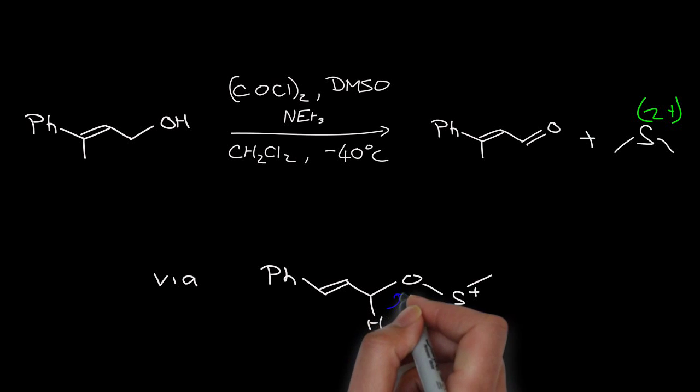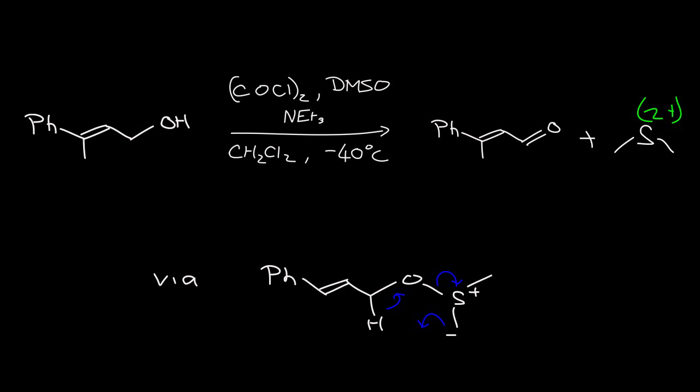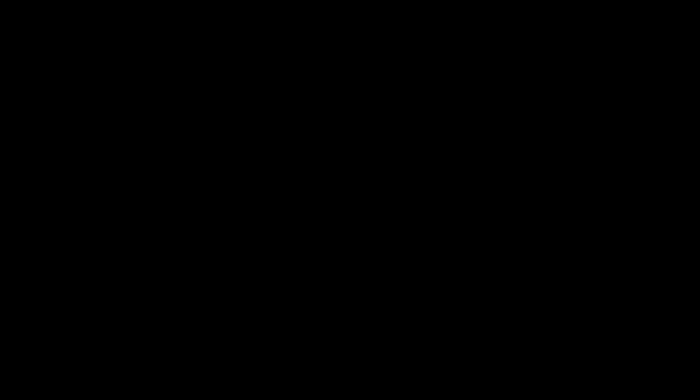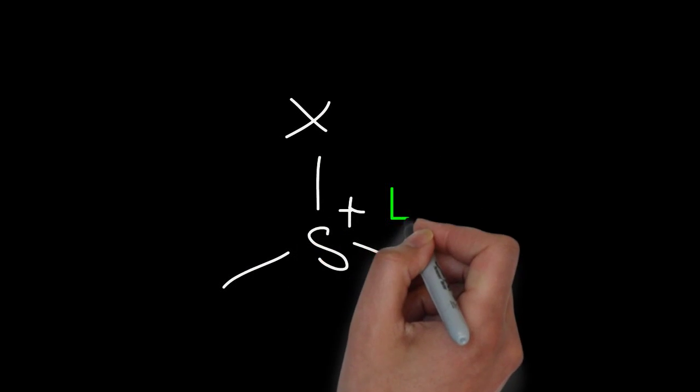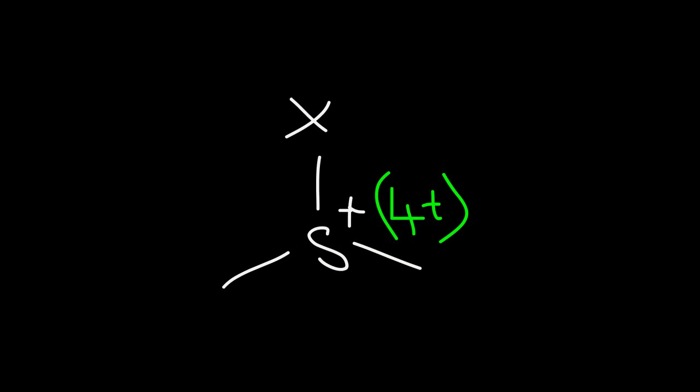One thing to note about the sulfur oxidation reactions is the key intermediate is a sulfur-4 species. The reagent has to be reduced to a lower oxidation state to oxidize the alcohol.